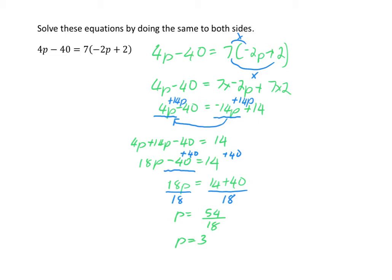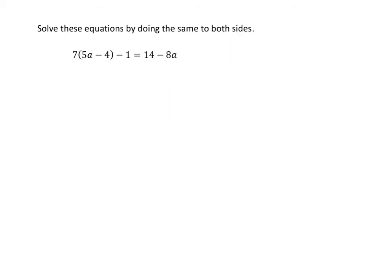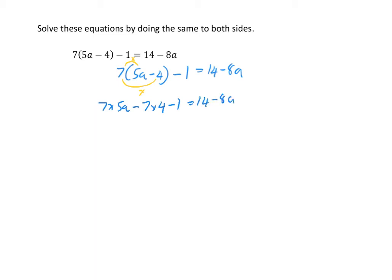Let's look at a second example. I want to solve the equation 7 times (5a minus 4) subtract 1 is equal to 14 minus 8a. The first step is to simplify by distributing the 7, multiplying it by both terms inside the bracket: 7 times 5a minus 7 times 4, minus 1, is equal to 14 minus 8a. So that becomes 35a minus 28 minus 1 is equal to 14 minus 8a.